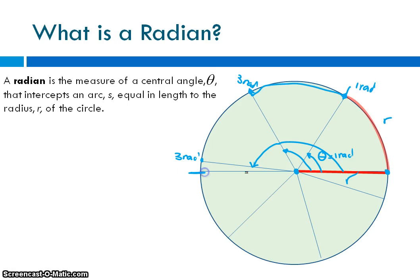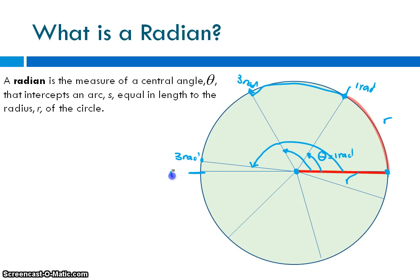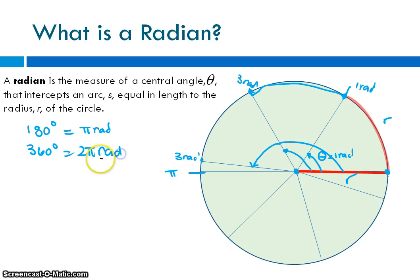We know that halfway around the circle, my initial side and terminal side sweep a semicircle, which is 180 degrees, and it's close to three radians. There's a special number close to three related to the circumference of the circle. The circumference is 2πr, and if the radius is one, that's 2π. So the number of radians halfway around the circle is π radians. A full circle is 2π radians. Therefore, 180 degrees equals π radians, and 360 degrees equals 2π radians.